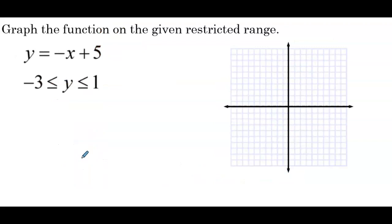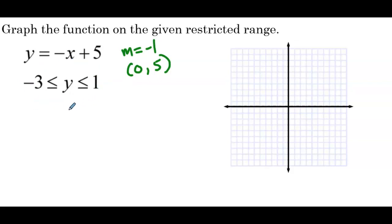Next example: graph the function on the given restricted range. The function is y equals negative x plus 5, and the range is negative 3 is less than or equal to y, which is less than or equal to 1. They've changed it up — instead of giving us the domain, they've given us the range. We know the slope is negative 1 and the y-intercept is (0, 5), but we need to figure out how to incorporate the range restriction.